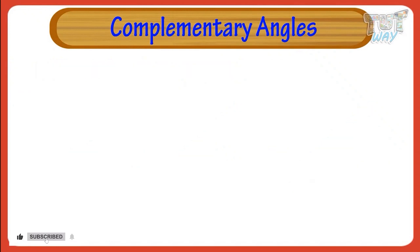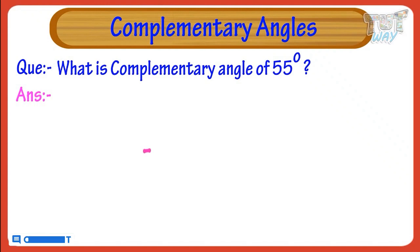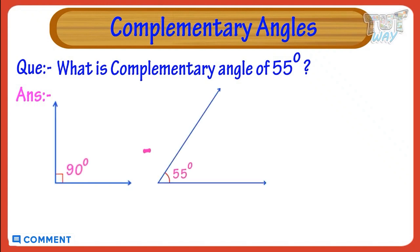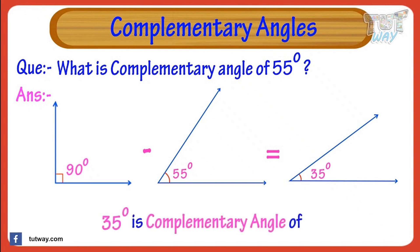For example: what is the complementary angle of a 55 degree angle? We subtract 55 from 90. 90 degrees minus 55 degrees gives us 35 degrees. So 35 degrees is the complementary angle of 55 degrees.